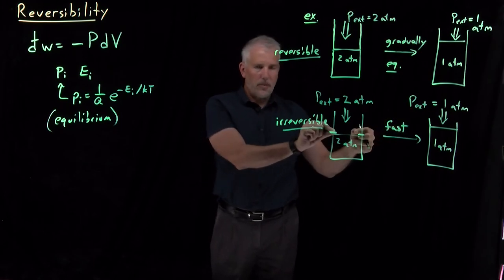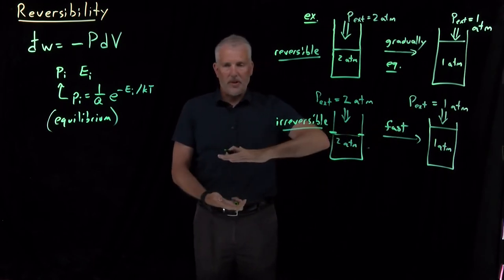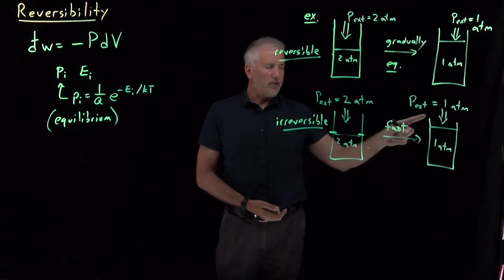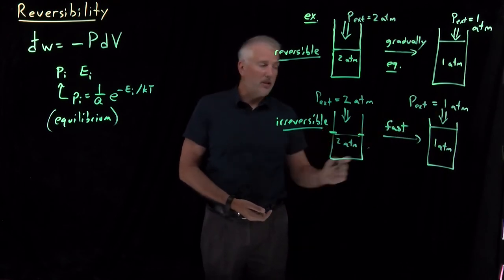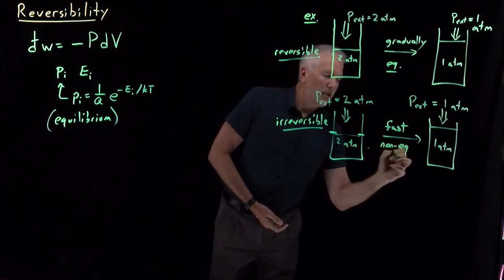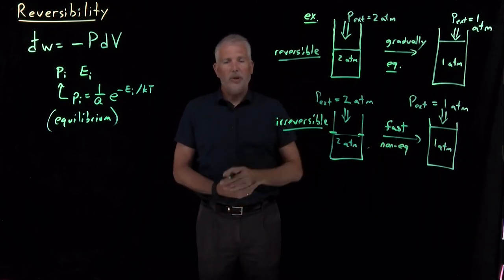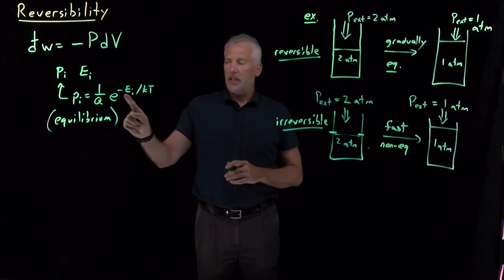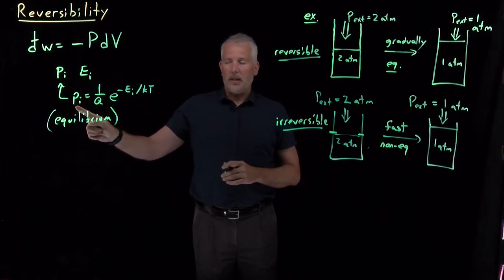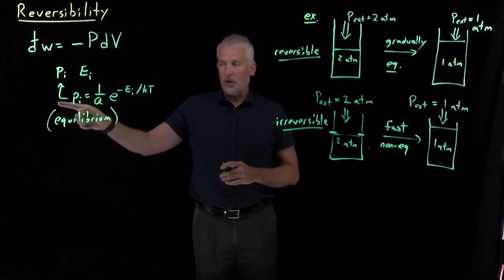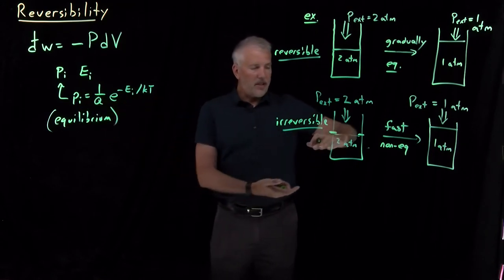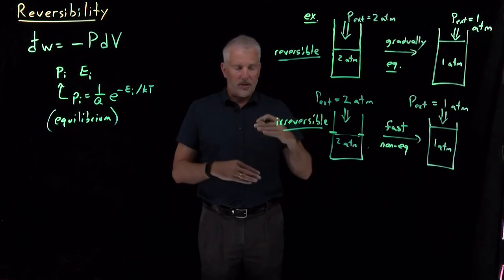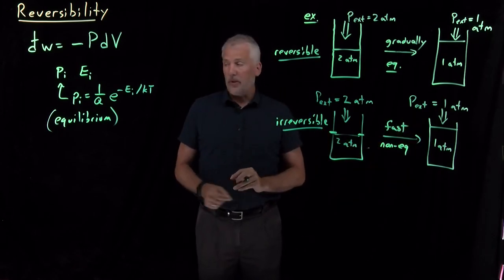Now that we've decreased the external pressure to one atmosphere, we remove the pins. The lid of the box flies up very quickly because the internal pressure of two atmospheres and the external pressure of one atmosphere are not in equilibrium with each other — this is a very non-equilibrium process. The volume changes so quickly that as the energy levels change, the populations of those levels can't keep up. Only after reaching the final volume and sitting there for a moment will the molecules re-reach Boltzmann equilibrium.